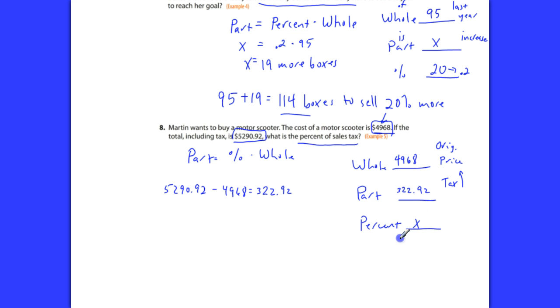Here's what we're going to do. We're going to take the part, which is 322.92, and we're going to plug it into this equation. 322.92. And that is equal to X times the original price, which was 4968. And we are going to divide both of these sides by 4968.